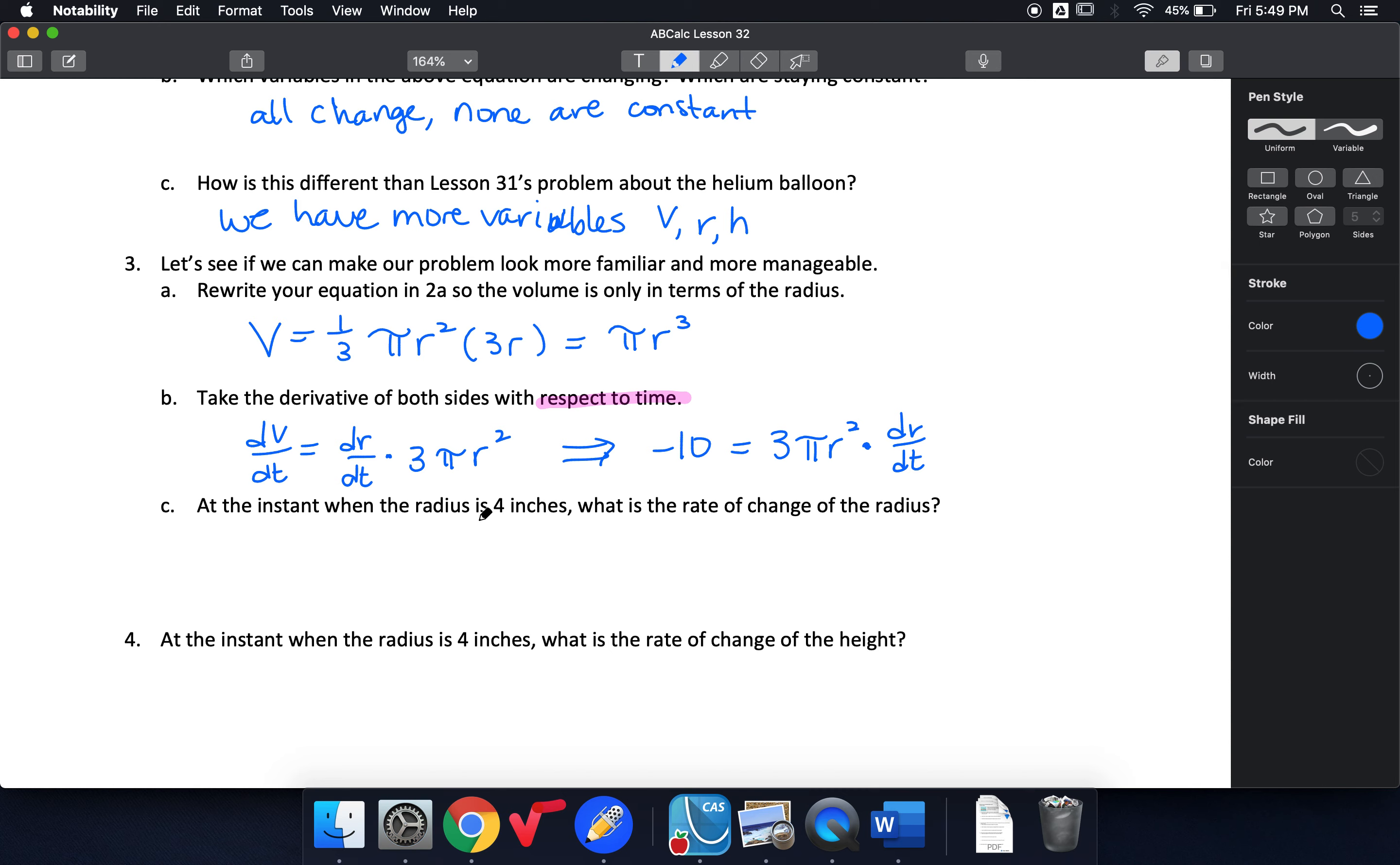At the instant when the radius is 4, so now I'm going to substitute 4 and get my dr/dt alone. dr/dt, so that's going to be negative 10 over 3 pi times 16. So I'm going to get some negative value. I could put that in my calculator and find my decimal approximation. My units though I want to make sure that I have are going to be inches per minute. So radius changes by inches, time is changing by minute.